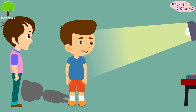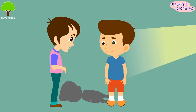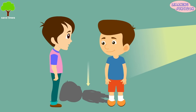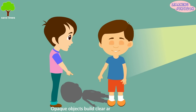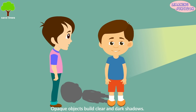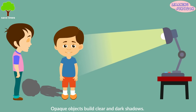Whenever light is not able to go through an object, it creates a dark area around that particular object. This part where the light cannot reach is called a shadow. Opaque objects build clear and dark shadows. This is how shadows are made.